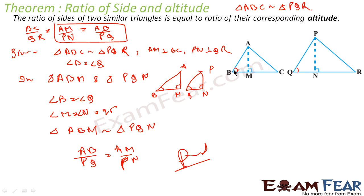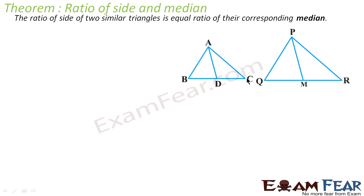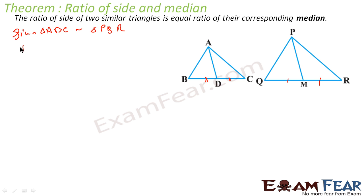Very simple — take the triangle with the perpendicular, take the smaller triangle, prove they are similar, and then the ratio of the sides follows. Now let's take another theorem: the ratio of sides of two similar triangles is equal to the ratio of their medians. BD equals DC and QM is the median of the other triangle. Given is triangle ABC similar to triangle PQR, and we have to prove that AD by PN equals the ratio of sides — AB by PQ or AC by PR.